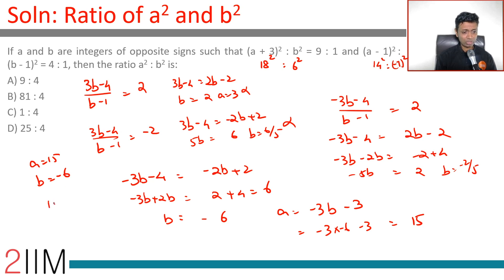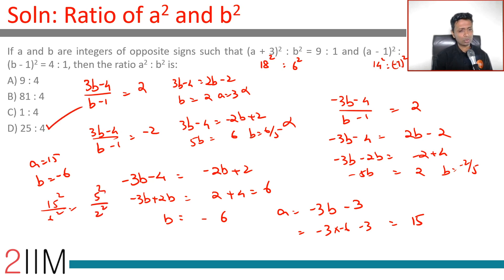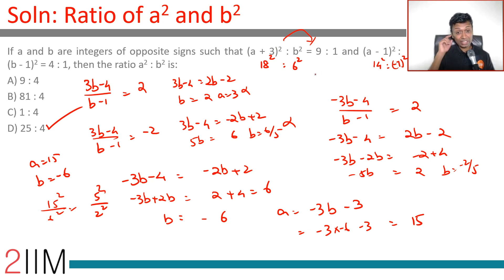So A²:B² = 15²:6² = 225:36 = 5²:2² = 25:4. This is the answer. It is a very doable question — the key is recognizing that taking the square root gives ±3 and ±2, plugging in all four combinations, and identifying the one where A and B are integers of opposite signs. That gives A = 15, B = −6, and A²:B² = 25:4.